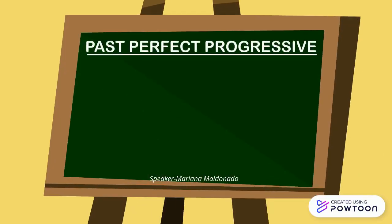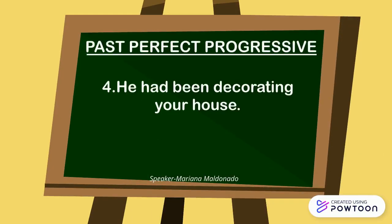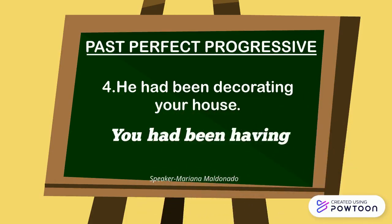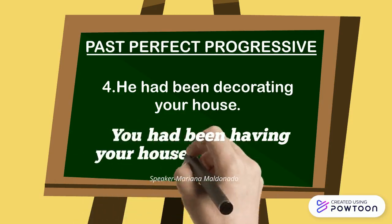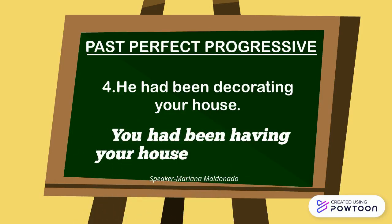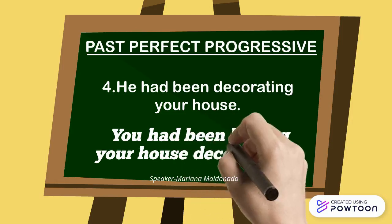In this case, we take as subject the person that the object of the sentence belongs to, which will be 'you'. Then we transform the verb 'have' into a past perfect progressive and place the object of the sentence, which is 'your house', and finally the main verb changes to the past participle.